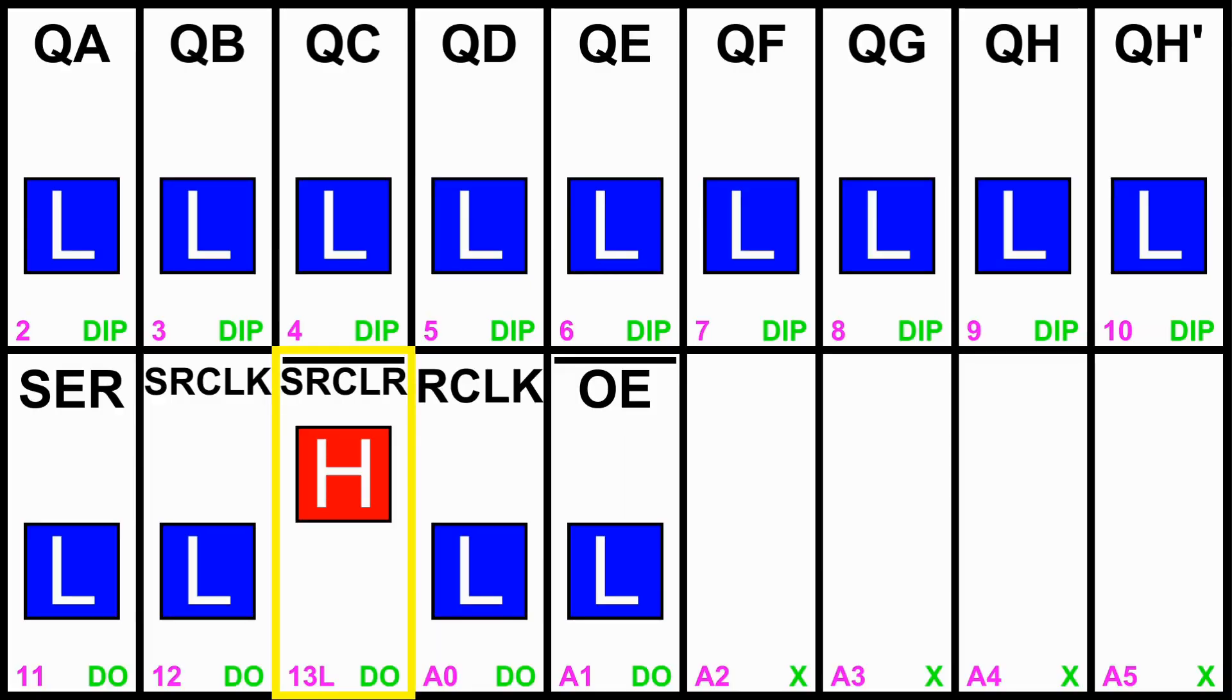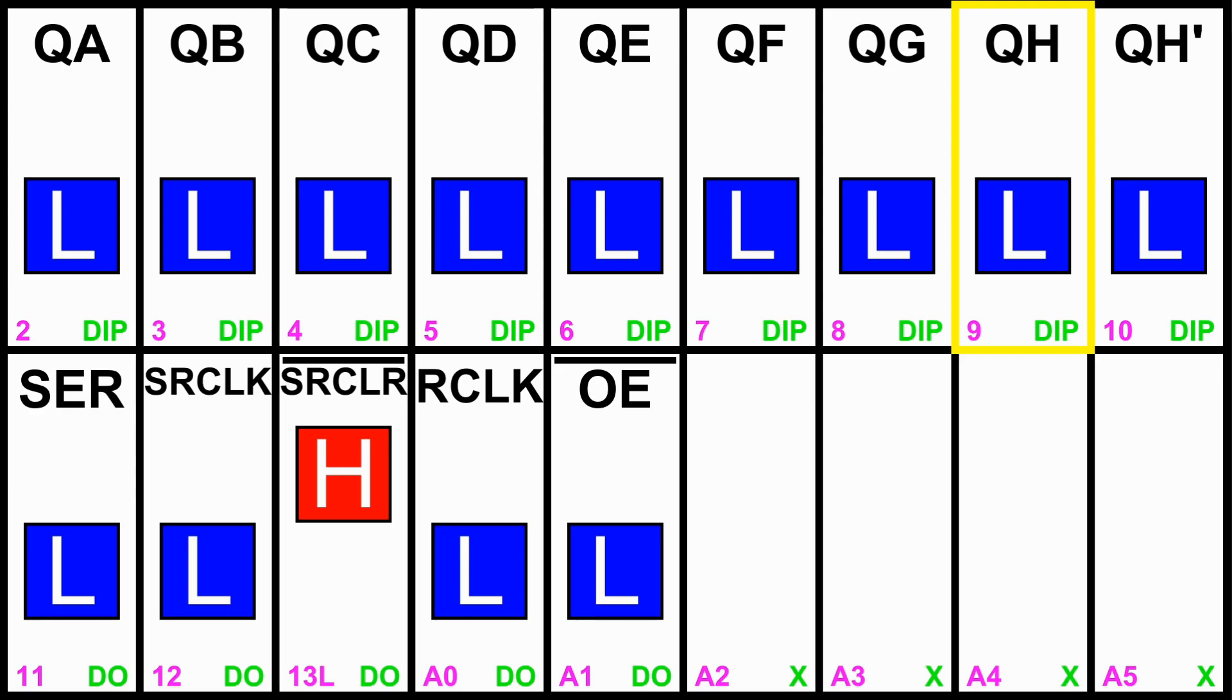So here we have our chip all connected up. The QA through QH are the normal outputs. This is the internal output that mirrors QH, except it's the one, you know, pre-update. It's whatever the shift register is rather than the data register. The serial input, the serial clock that does the shifting, the active low serial clear asynchronous, the active low output enable asynchronous, and the R clock that updates the outputs.